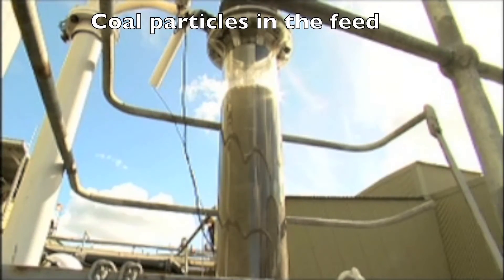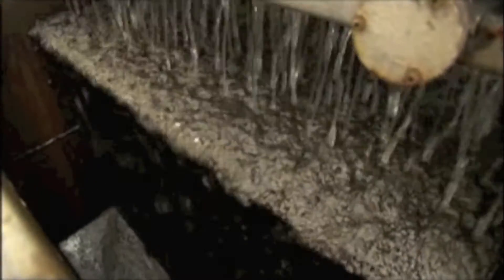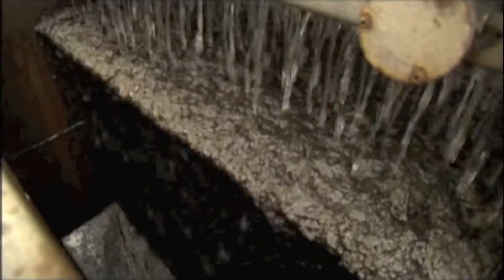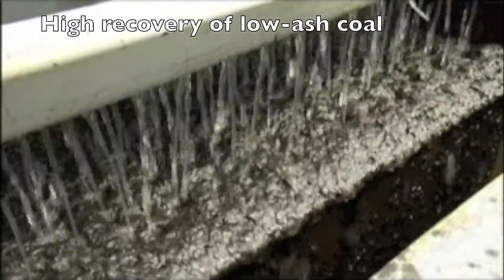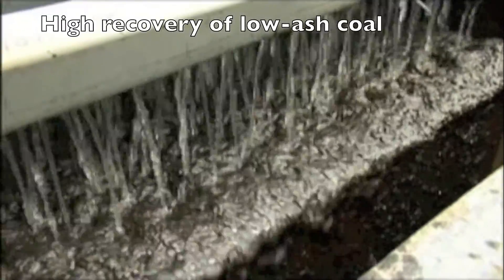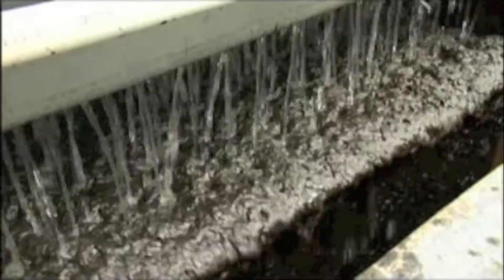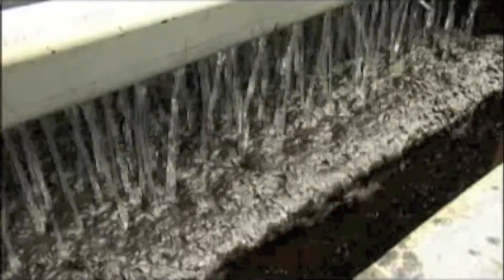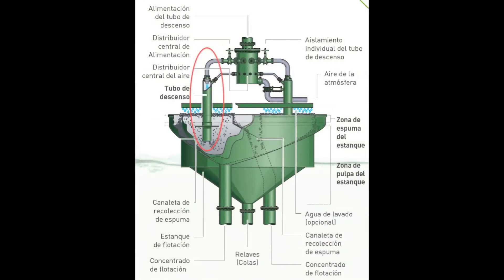The bubbles, which are coated with coal particles, separate from the liquid in the bottom of the cell and rise to form a froth layer. Wash water is applied to reduce the ash content. The froth product flows over the lip of the cell into a launder.